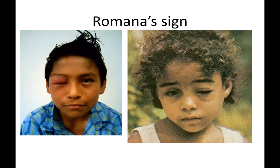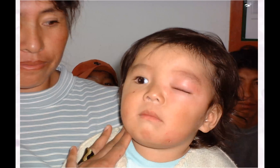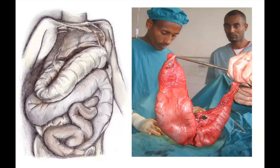Here is Romana's sign — swollen eyelids, eyes swollen shut. And here is the enlarged megacolon.